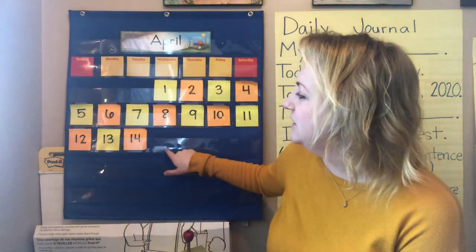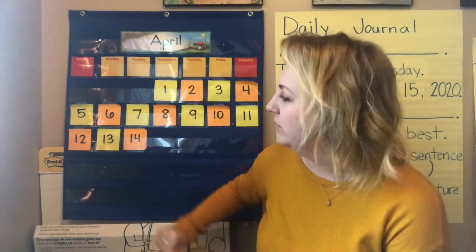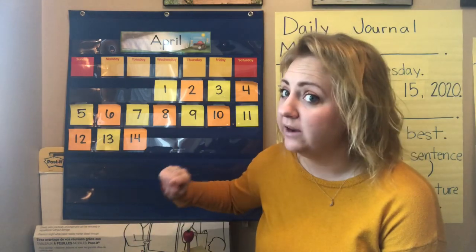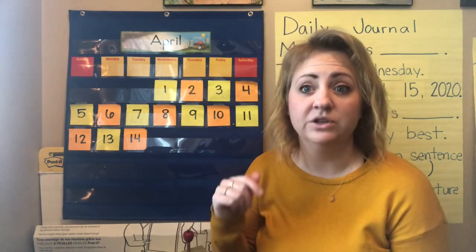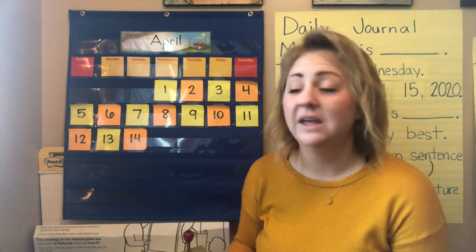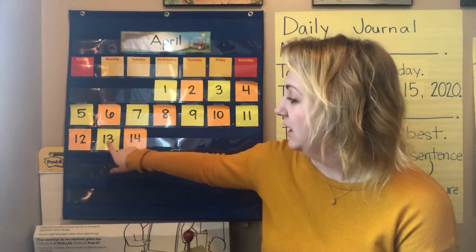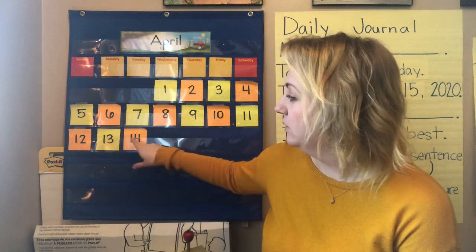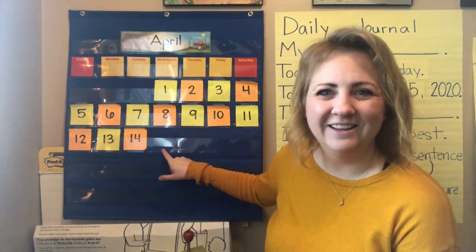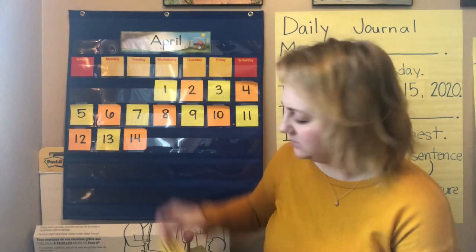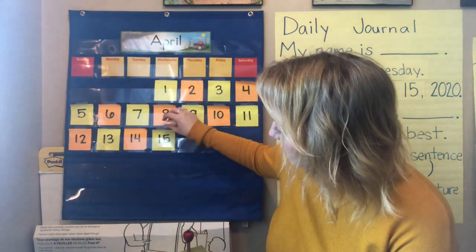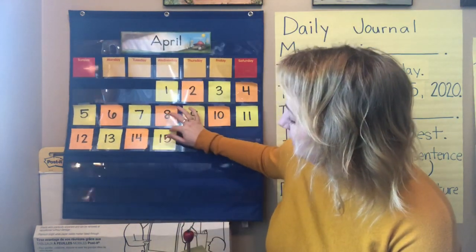So we're going to put 15 right here. What color should be next? We have an A-B pattern, which is A-B, A-B. Yellow, orange, yellow, orange, yellow, orange. We have yellow, orange. Yellow is going to go here. So we have our yellow 15 and we did our counting on strategy to get there.